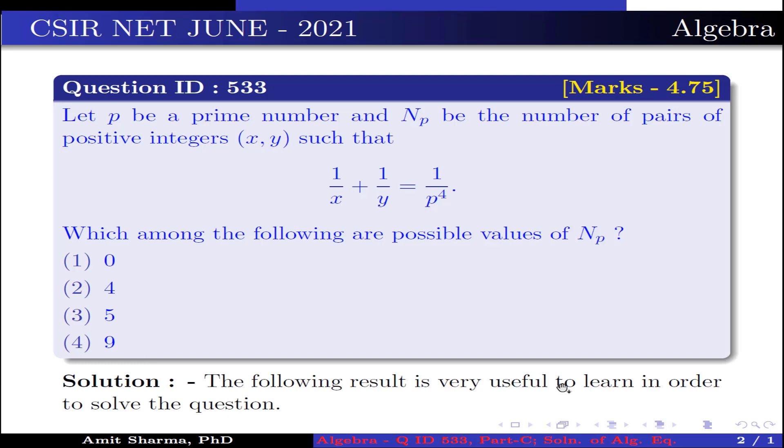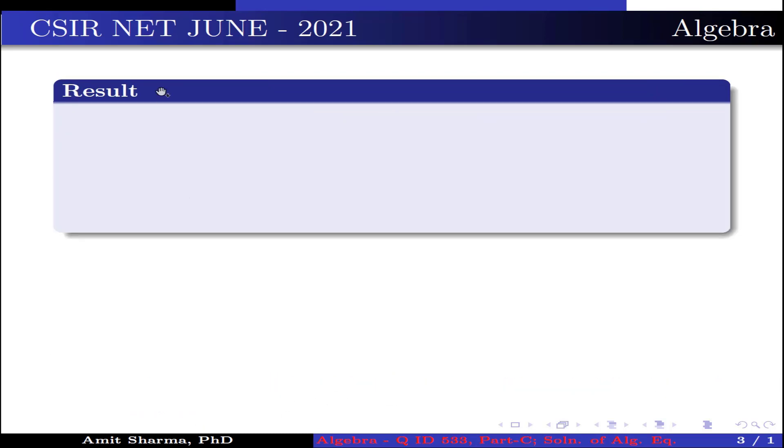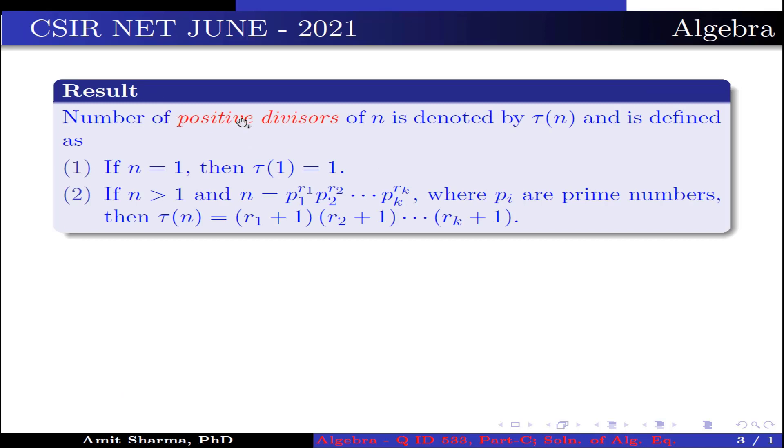The following result is very useful to solve the equation. Number of positive divisors of n is denoted by τ(n) and is defined as: (1) If n = 1, then τ(1) = 1. (2) If n > 1 and n = p₁^r₁ · p₂^r₂ ⋯ pₖ^rₖ where pᵢ are prime numbers, then τ(n) = (r₁ + 1)(r₂ + 1) ⋯ (rₖ + 1).